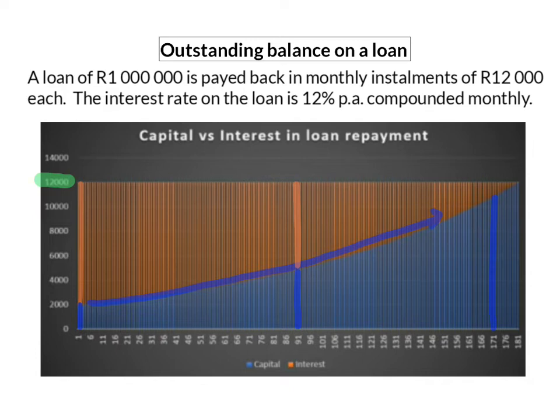When it comes to calculating the outstanding balance on a loan, you cannot simply take the value of your payments and subtract that from the original loan amount, because only a part of that installment goes to the repayment of the loan, and the rest is interest. It is important to know that when there's only one amount receiving compound interest, we can work with our normal compound interest formula.